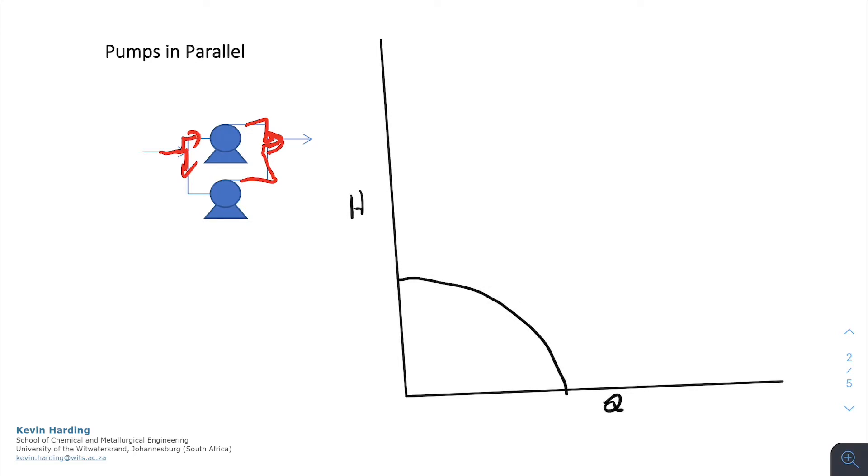If we again look at this in terms of a pump curve, there we have our original pump for one pump, we now see that the pressure, or the head, the total head this is able to deliver does not change, but the velocity does. So at any point at a given head, so we're now looking at the head value, it's not going to change, but the velocity term, so this is the distance here, at a head of this value here, whatever that is in my Q value, is going to double because we have two pumps added in parallel.